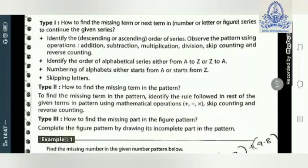Type 2: How to find the missing term in the pattern. To find the missing term in a pattern, identify the rule followed in the rest of the given terms using mathematical operations like plus, minus, multiply, skip counting, and reverse counting. The logic can be in any form — addition, subtraction, multiplication, skip counting, or reverse counting.